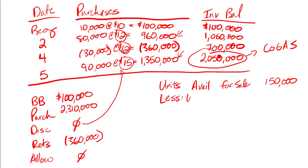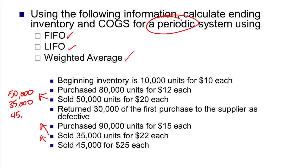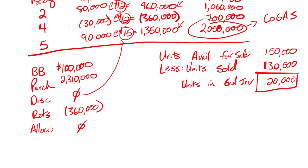Next I need to know the units sold. Going back to the data slide: I sold 50,000, then 35,000 and 45,000 — treating all sales as if they happened at one time. So 50 + 35 + 45 = 130,000 units sold. Of the 150,000 units available, I've sold 130,000, so my units in ending inventory must be 20,000. I need this number to do my periodic calculations.